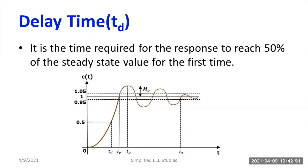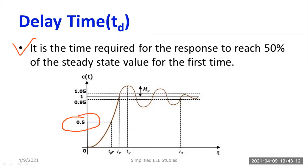Let us recall the definition of delay time. It is the time required for the response to reach 50% of the steady state value for the very first time. So td is nothing but the time taken for the response to reach 50% of the final value — that is called delay time.